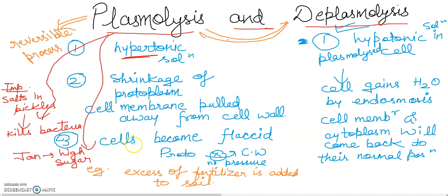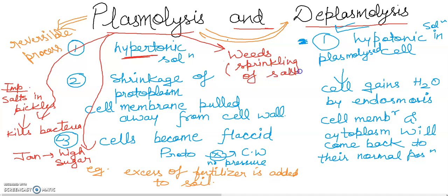For example, when we use methods to remove weeds — that is, unwanted plants — we sprinkle extra salt at the base of the weeds in the soil. The extra salt prevents water absorption and will damage the weed cells. This causes the weeds to stop growing, and this is also caused due to the plasmolysis process.